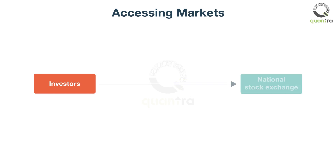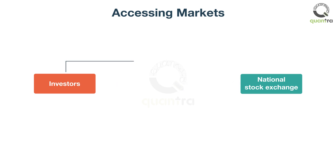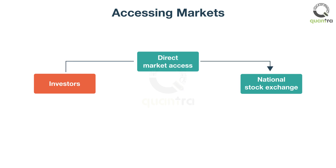Consider that as an investor you want to buy 100 shares of the Happy Meal Company listed on the National Stock Exchange. But before you can place an order, you should be able to access the stock market. Two popular ways to access the stock market are Direct Market Access (DMA) and accessing markets via a stockbroker. Accessing markets via DMA typically involves obtaining a membership with an exchange in order to carry out trading activities.